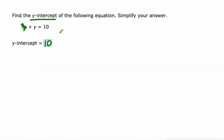So this is the y intercept, because the definition of y intercept is the value of y when x equals zero. And if we put in zero for x, three times zero would be zero and zero plus y would be y. So y is 10. Pretty simple, right?